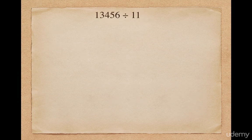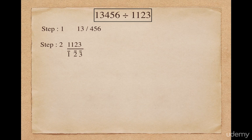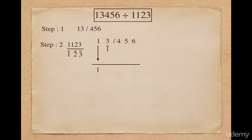One more example. Suppose I want to divide 13456 by 1123. As a first step, I split 13456 into quotient and remainder. I apply the concept of transpose and apply — I discard the first digit of the divisor and take the transpose of the remaining digits, giving me 1-bar, 2-bar, and 3-bar. I put the first digit 1 as it is. 1 multiplied with individual digits 1-bar, 2-bar, and 3-bar gives me 1-bar, 2-bar, and 3-bar. Adding all digits of the second column gives me 2. 2 multiplied with individual digits 1-bar, 2-bar, and 3-bar gives me 2-bar, 4-bar, and 6-bar.